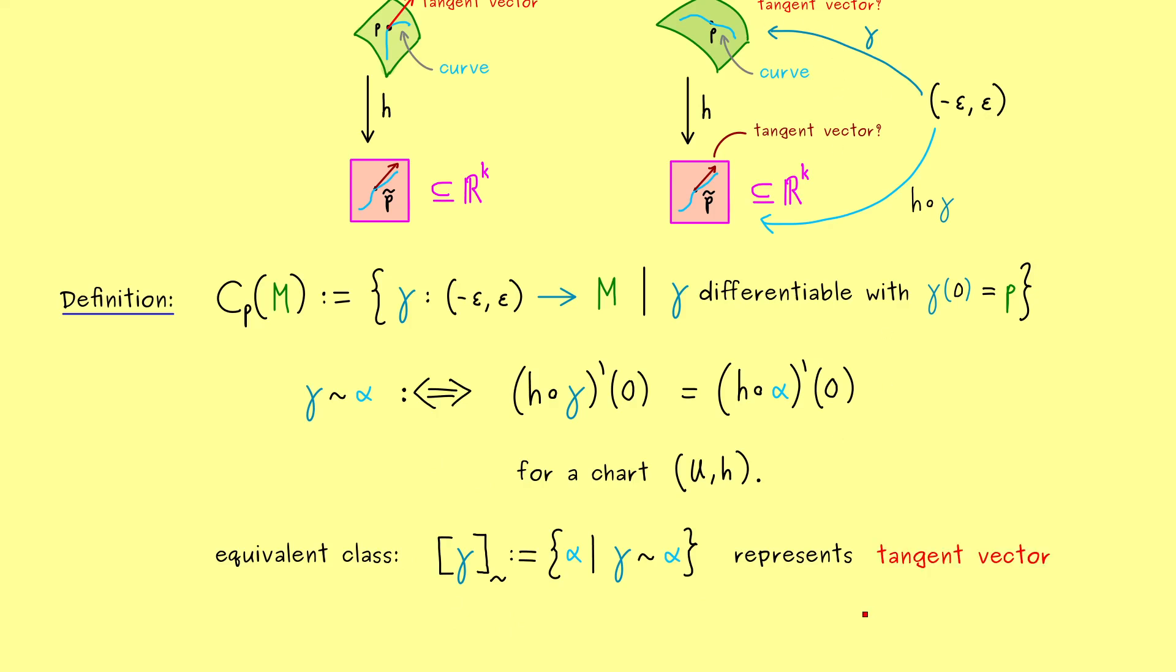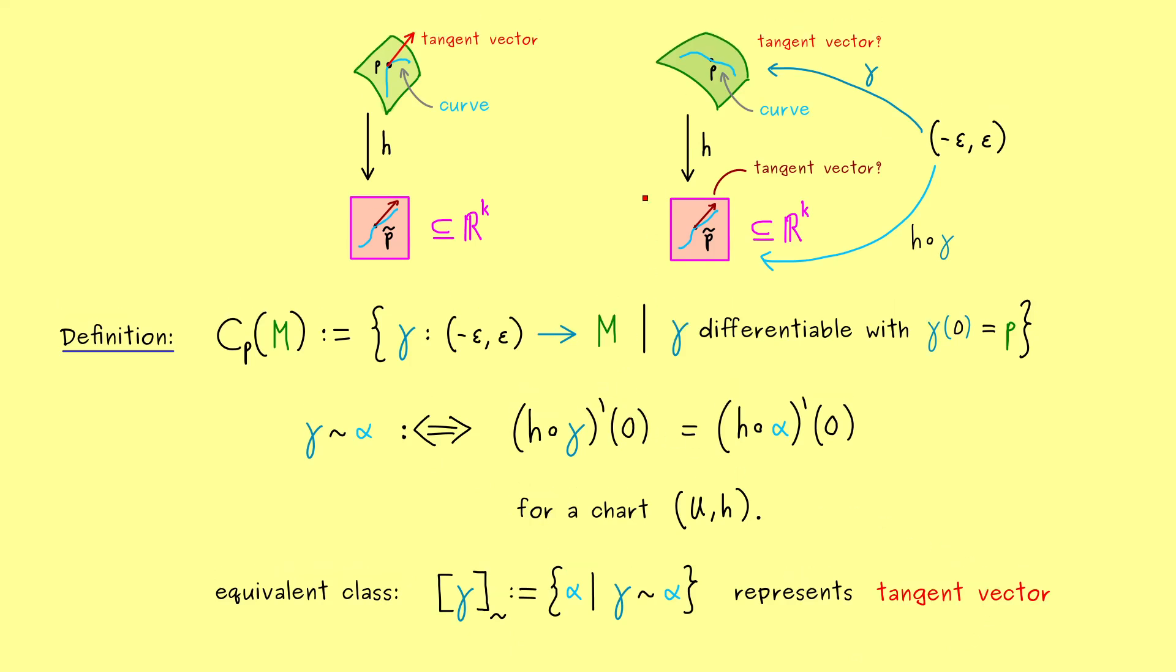So we see, all the curves in this box have the same tangent vector. Therefore, we can simply say, this box represents a tangent vector. So what you should see here is that this representing of tangent vectors works perfectly for submanifolds. And the important thing for us is now, it can also be translated to the abstract case. And with that, we have finally found one possibility to deal with tangent vectors on an abstract manifold.